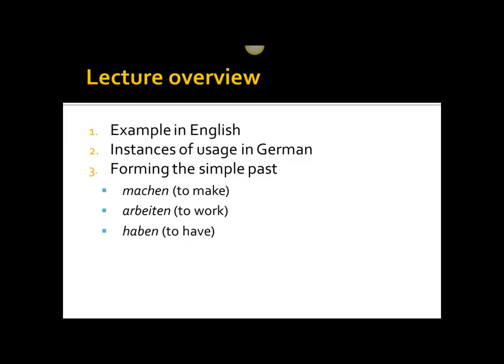As usual, we're going to start the lecture with an example in English, and then we're going to transition over to a brief discussion of when we use the simple past in German. After that, I'm going to give three examples on using the simple past: machen, to make; arbeiten, to work; and haben, to have. Each one gives an example of rules that we could use with other weak verbs in German.